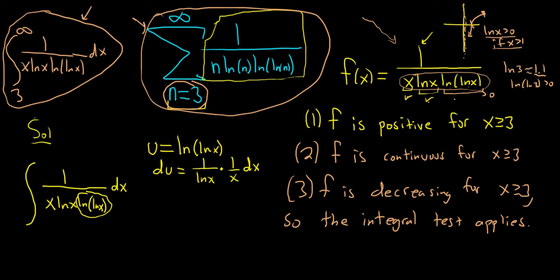Again, the derivative of the natural log of x is 1 over x. Here it's the natural log of the natural log of x. So it's 1 over the natural log of x times the derivative of the inside, which is simply 1 over x. And notice how beautiful all of this works out. This piece here is this piece here. So that's our du. Just amazing. So this is equal to, wow, this is equal to du, and the bottom piece is just u. And so this is ln, absolute value of u.